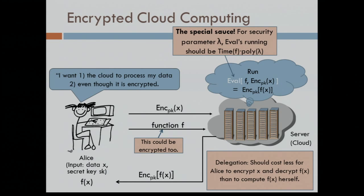One important feature of this scenario is the fact that Alice wants the cloud to do the work because she wants to save work — she doesn't want to do all of it herself. In particular, the work that Alice does encrypting X and decrypting F(X) should be a lot smaller than the cost of computing F(X) from scratch. Ideally, we would like this cost to be completely independent of the complexity of F. The amount of work the server does relates to the complexity of F; the amount of work the client does should not.